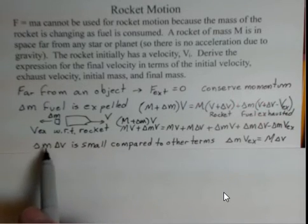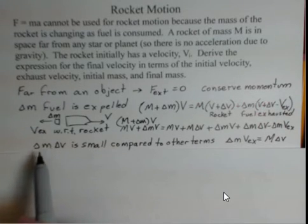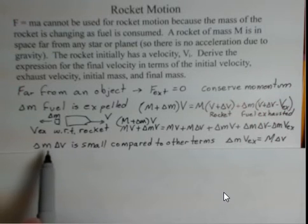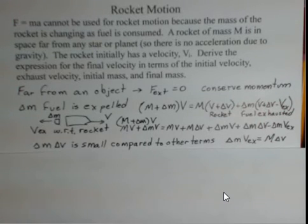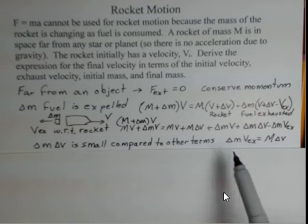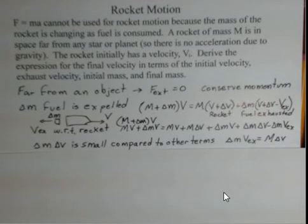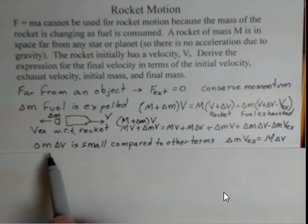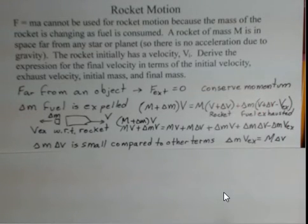We want to simplify just a little bit. And we can do so because these are going to become infinitesimals, the delta m and delta v. There are two of them multiplied together. That's going to be a small term, a small value, compared to terms that only have one delta, one delta m or one delta v. So we're going to drop off the delta m delta v term.